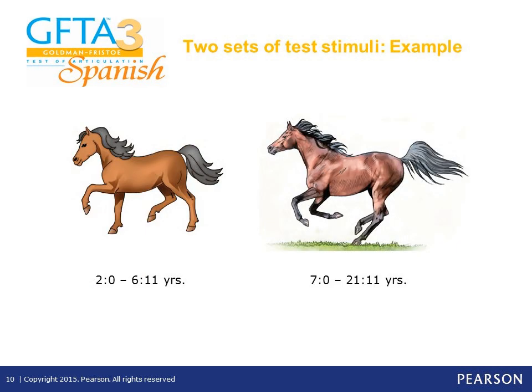Here is an example showing how the art looks with objects. The one before was with people, and this one is with objects.